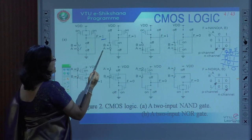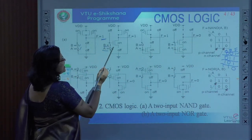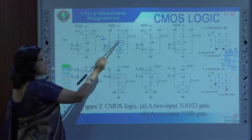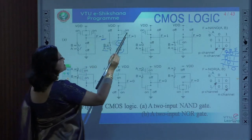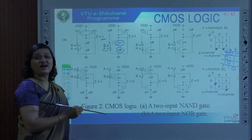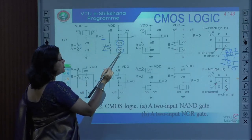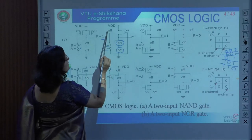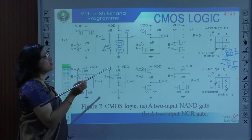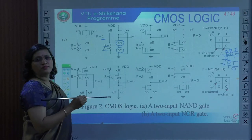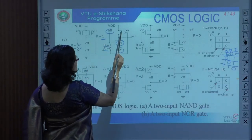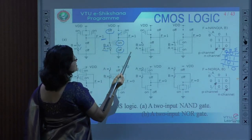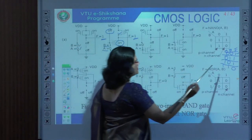For the third case, when A=1 and B=0: the A NMOS transistor is on but the B NMOS transistor is off, so the series path is open — no pull-down path. The PMOS transistors are in parallel; since B=0, that PMOS transistor is on. Any one parallel transistor being on is sufficient, so the output F is pulled up to supply voltage VDD, and we get F = 1.